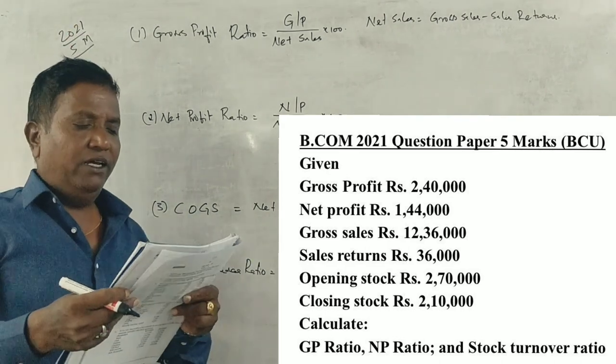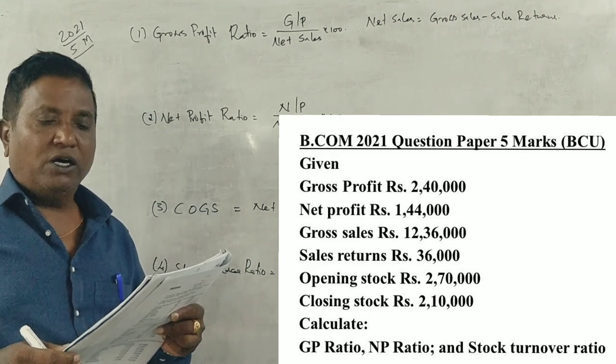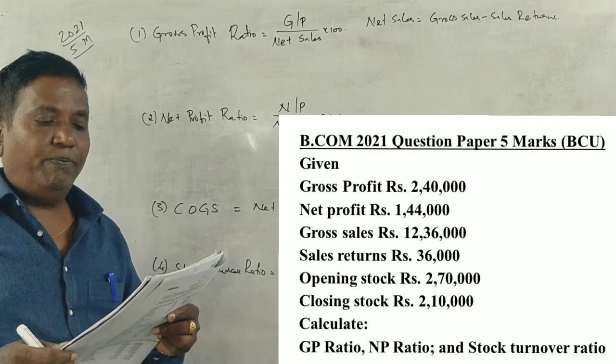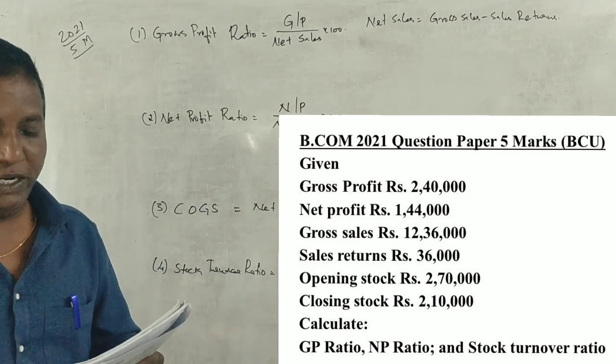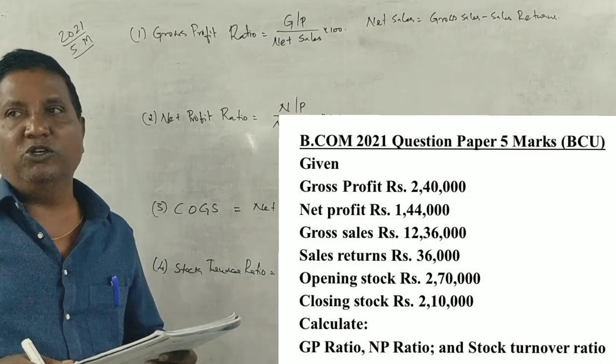Given: Gross Profit Rs. 2,40,000, Net Profit Rs. 1,44,000, Gross Sales Rs. 12,36,000, Sales Returns Rs. 36,000, Opening Stock Rs. 2,70,000, Closing Stock Rs. 2,10,000. Calculate Gross Profit Ratio, Net Profit Ratio, and Stock Turnover Ratio.